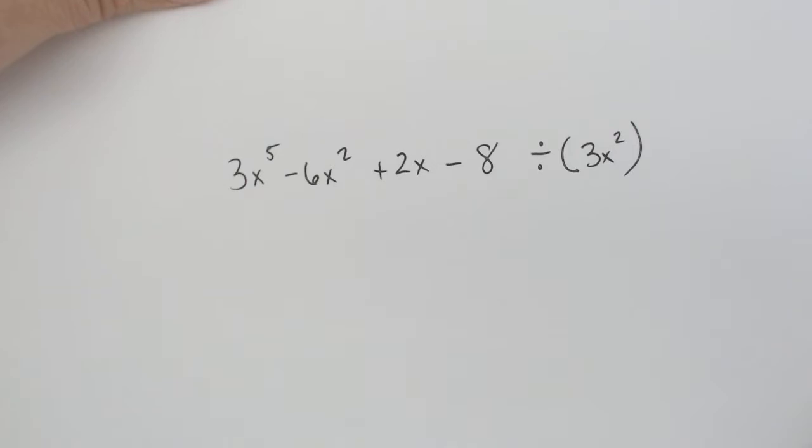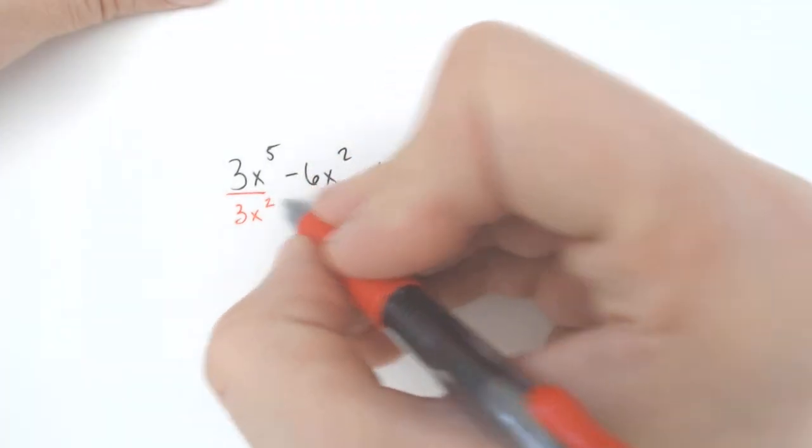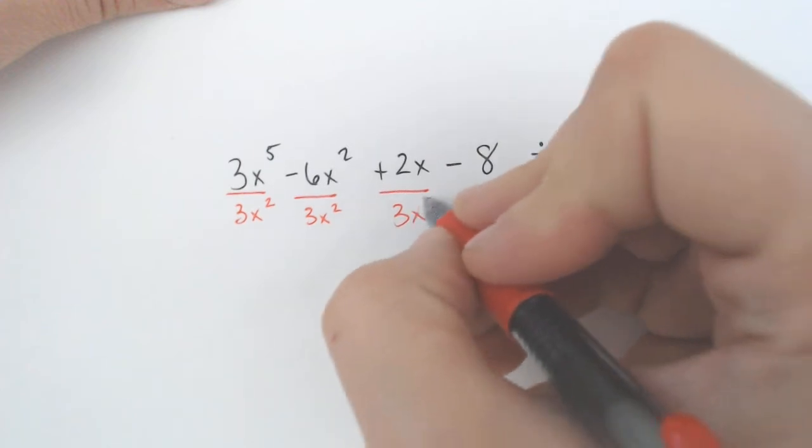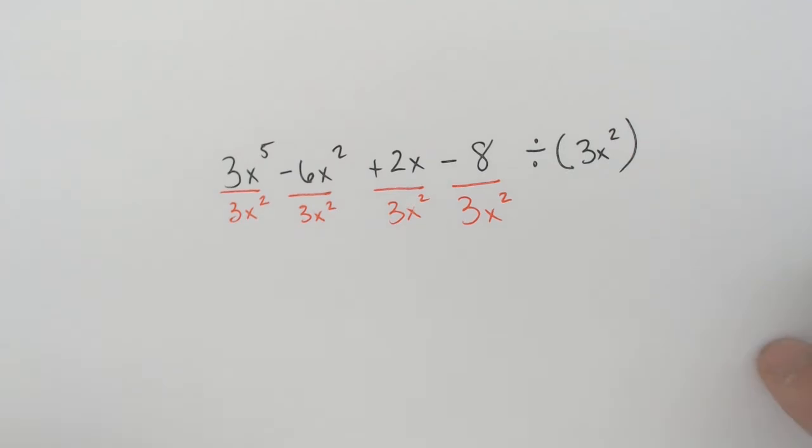If you're dividing by a single term, then what you would really need to do is write each of these and divide every single piece by 3x squared. Every single piece gets a 3x squared, and you just simplify each of them individually.